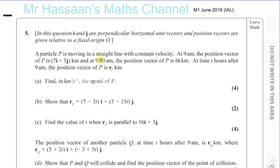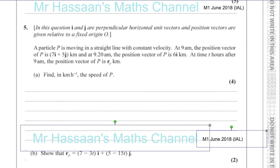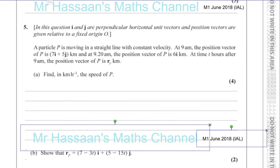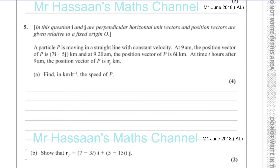i is like north and j is normally east if you think about axes. A particle P is moving in a straight line with constant velocity. At 9 a.m. the position vector of P is 7i + 5j kilometres, and at 9:20 a.m. the position vector of P is 6i kilometres. At time t hours after 9 a.m. the position vector of P is rp kilometres. We need to find the speed of P. We know the position vector at 9 a.m. — that's the initial position, so I'm going to call that r₀.